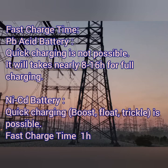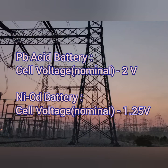Even though nickel cadmium can fast charge, using it in a partially charged condition will also reduce battery efficiency. Next, cell voltage: lead acid batteries have a nominal voltage of up to 2 volts per cell, which can vary from 1.8 to 2 volts depending on the manufacturer. Nickel cadmium batteries have a nominal voltage of 1.25 volts per cell.